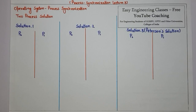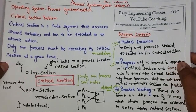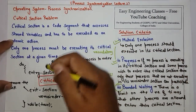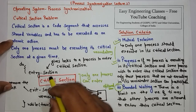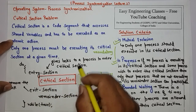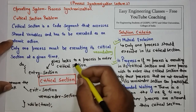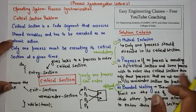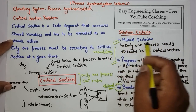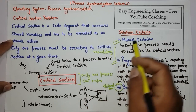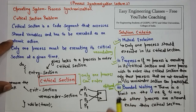In this video lecture we are going to see about the two process solution of process synchronization. As in the previous video we have seen about the concept of critical section problem — every process which needs to enter the critical section has to fulfill the condition in the entry section, which provides access. We have also seen the solution criteria: mutual exclusion and progress are the mandatory criteria, whereas bounded waiting is optional.